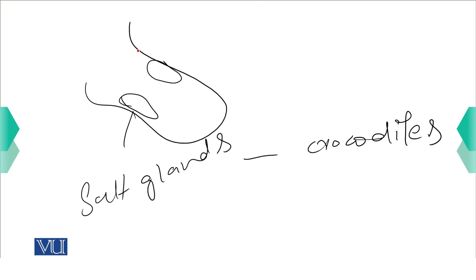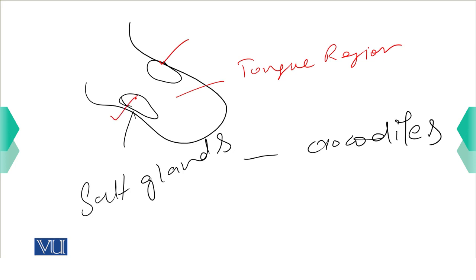In crocodiles, salt glands are found on both sides in the tongue region. This is how the removal of excretory waste occurs through these salt glands.